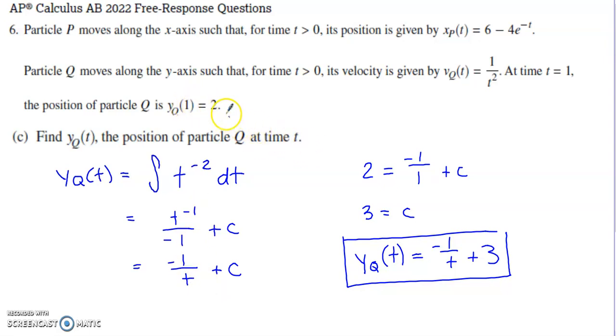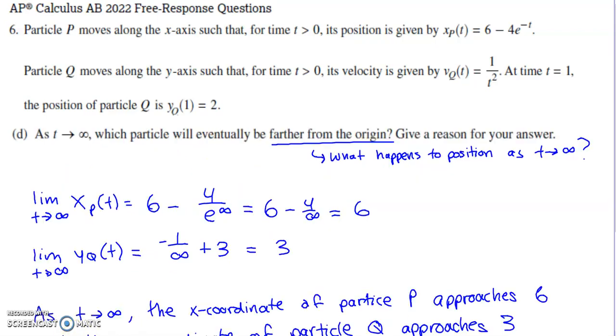I put 2 in for the y value, I put 1 in for the time. Solving this equation right here for C gives you a value of 3 for C. So my position function for particle Q is completed and right here.